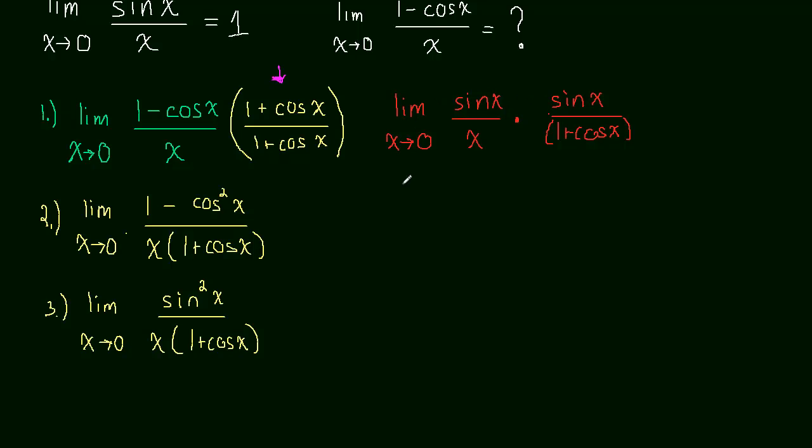And now because of limit properties, so this was step 4, because of limit properties, I know I can take the limit. The limit of a product is the product of a limit, of the limit. So let me show you that. So this is going to be the limit as x approaches 0 of sine x over x times by the limit, so we have two limits now, the limit as x approaches 0 of sine x over 1 plus cos x.